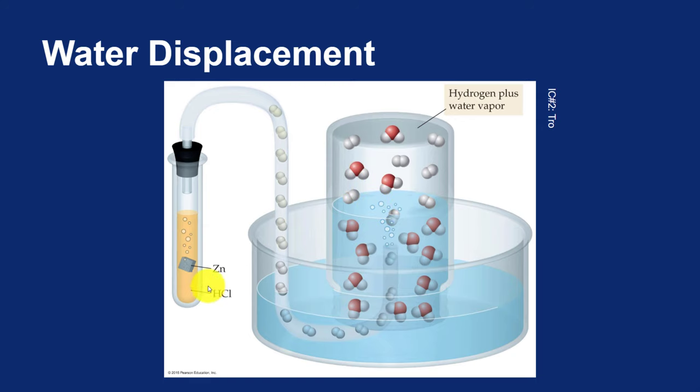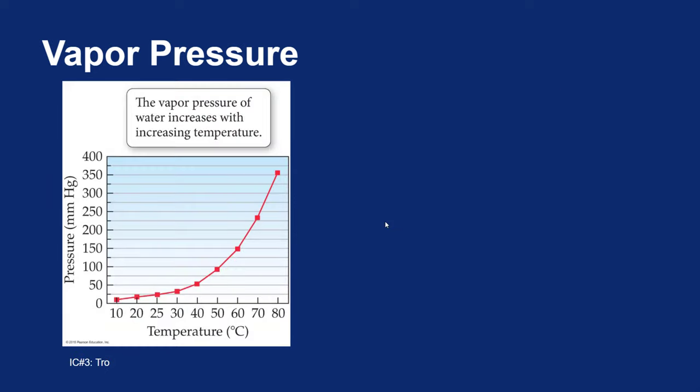So when you collect a gas through water displacement, you do get the gas that you want, but you also have water vapor. And so that's why in this graphic it says hydrogen plus water vapor. Now this is okay to have both gases in the container at the same time. Because if there's one substance that people have studied for a long time, it's water. We know a lot about water. We know that if you warm water up, it will evaporate faster.